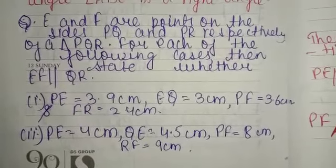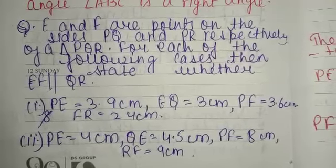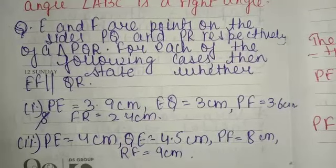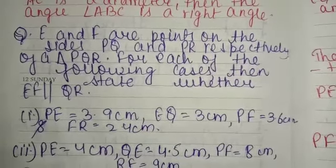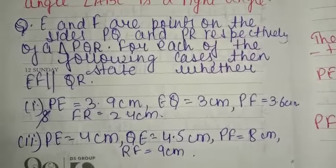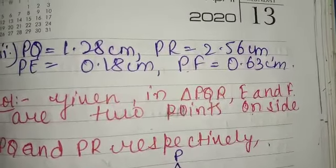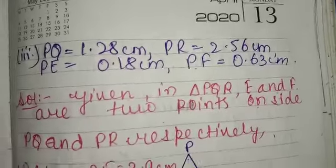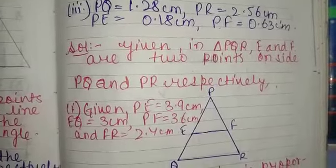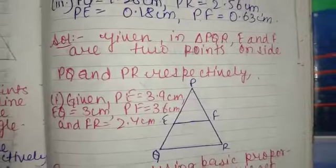We have a question. E and F are points on the sides PQ and PR respectively of a triangle PQR. For each of the following cases, state whether EF parallel QR. Here we have given the first one: PE is equal to 3.9 cm, EQ is equal to 3 cm, PF is equal to 3.6 cm, and FR is equal to 2.4 cm.